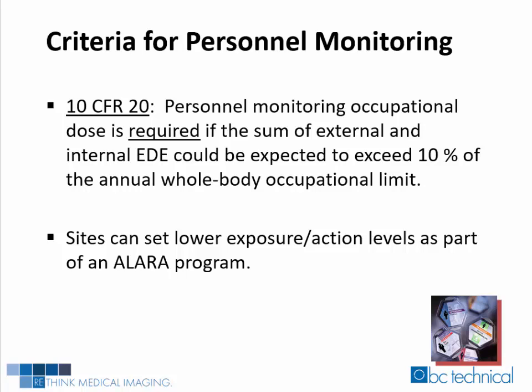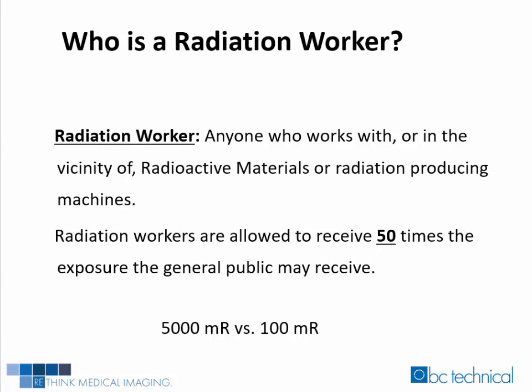Contact your RSO if you have any questions regarding the exposure limits at your facility. A radiation worker, by definition, is anyone who works with, or in the vicinity of, radioactive materials or radiation-producing machines. Radiation workers are allowed by regulation to receive 50 times the exposure that the general public may receive. Therefore, a radiation worker is allowed to receive 5,000 millirems per year. The general public is only allowed to receive 100 millirems per year.